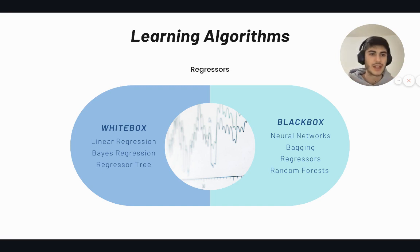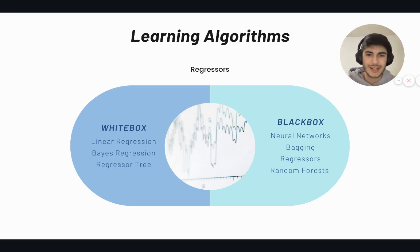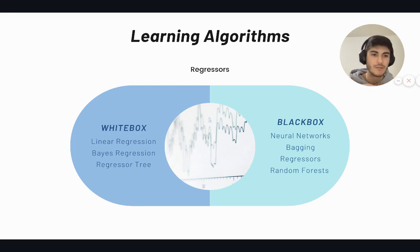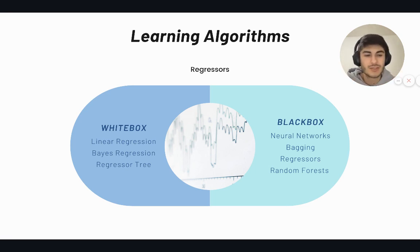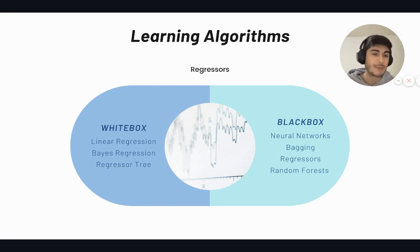Now we've transformed the advertising spend and centralized all our data. We need to deploy our learning algorithm. In data science there are two main types of learning algorithms: regressors and classifiers. For marketing mix models, the most commonly used are regressors, and these come in two types: white boxes and black boxes. White boxes are mainly linear regression, regression trees, and similar — these are regressors whose output formula can be understood by the human mind and are super useful for diagnostic analysis to see what happened in the past.